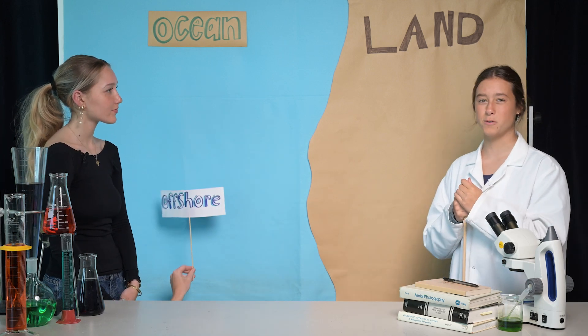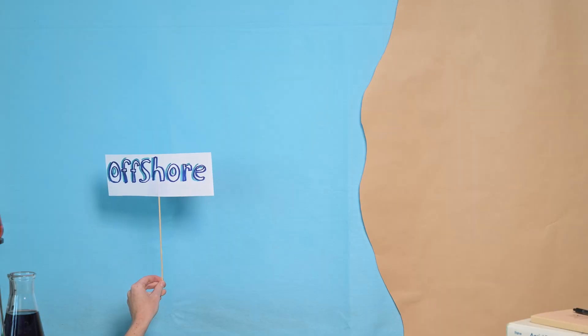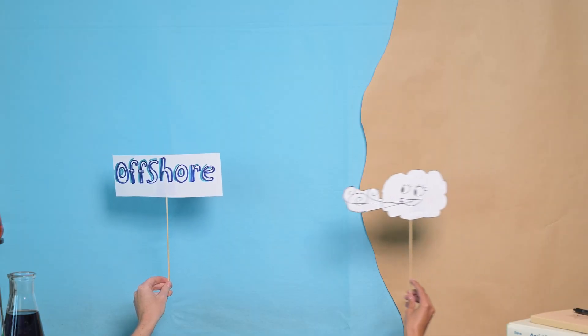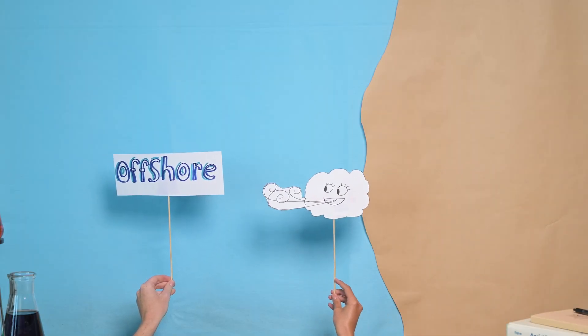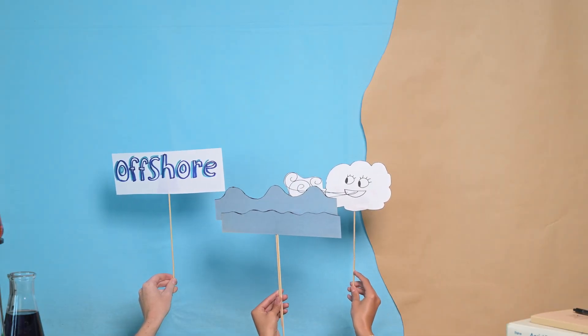Surfers like wind that blows offshore. Okay, but what's offshore? Offshore means that the wind is blowing from the land to the ocean, making the wave super clean.